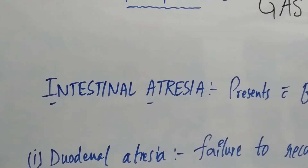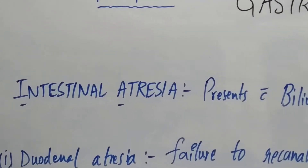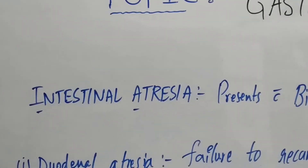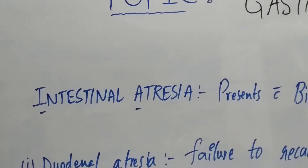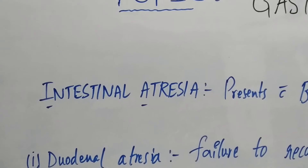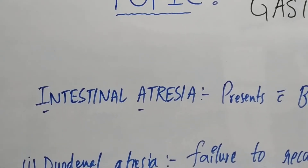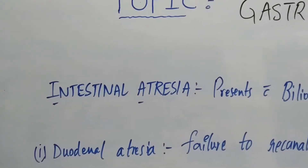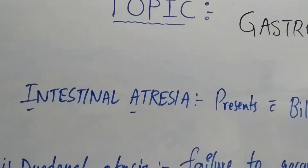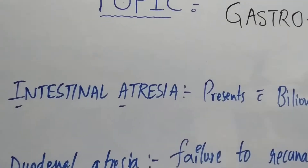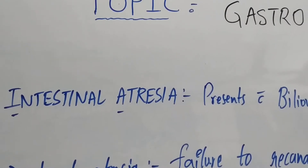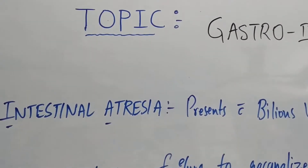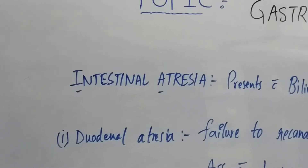Hello everyone. In this video, the continuation of gastrointestinal embryological defects — the last three topics are intestinal atresia, hypertrophic pyloric stenosis, and pancreas and spleen embryology.